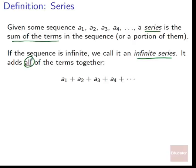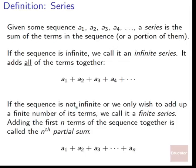An infinite series means it keeps going forever: A1 plus A2 plus A3 plus A4, going on forever and ever. On the other hand, we can talk about a sequence that's not infinite, or if we only wish to add up a finite number of its terms — just a portion, a finite portion that we can count. We call this a finite series.